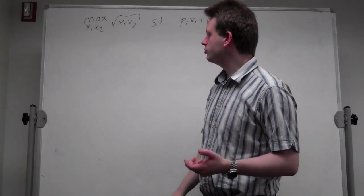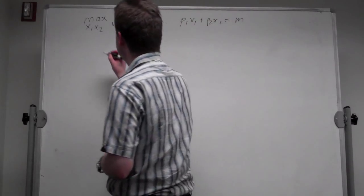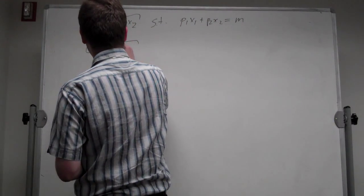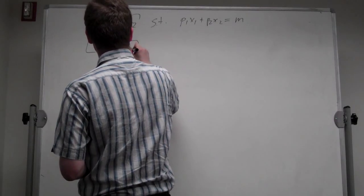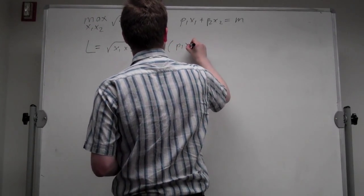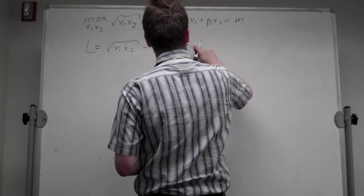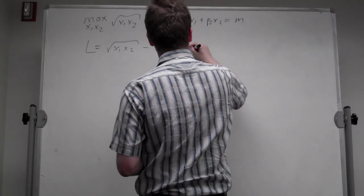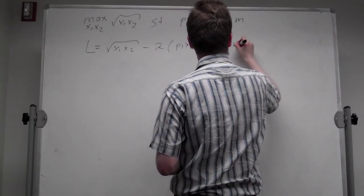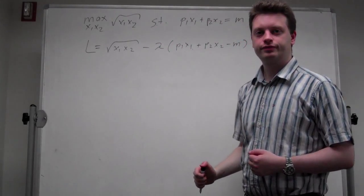Now we can write down our Lagrangian. L is equal to the square root of x1*x2 minus lambda times (p1*x1 plus p2*x2 minus m). And we have our Lagrangian.